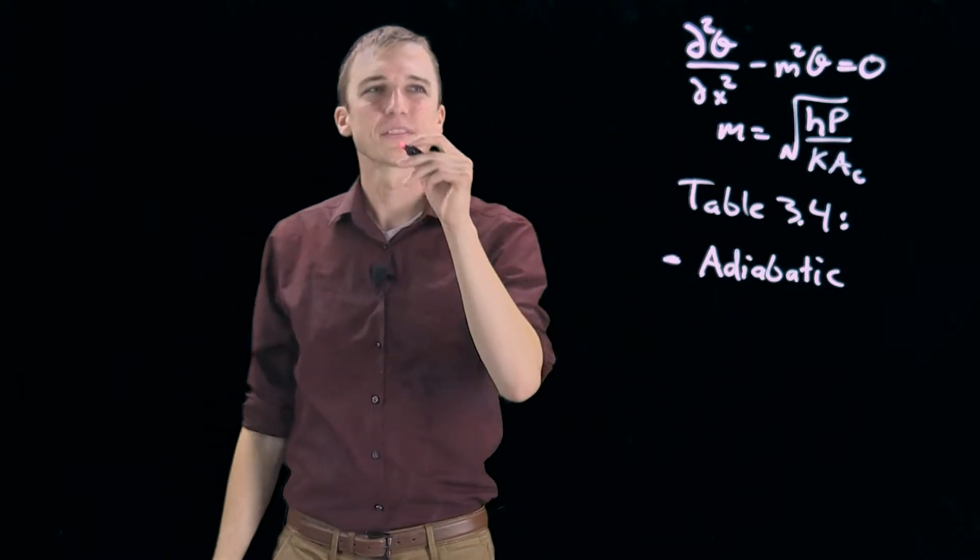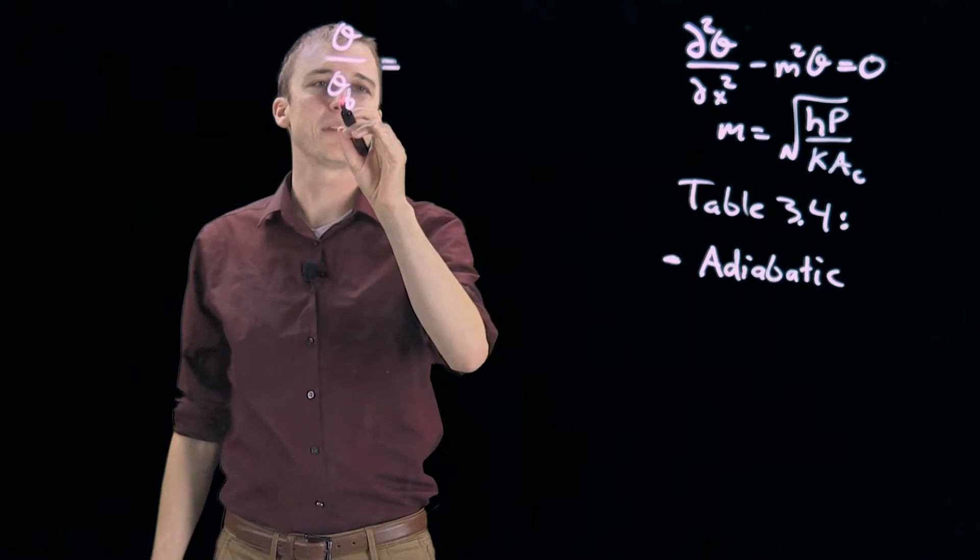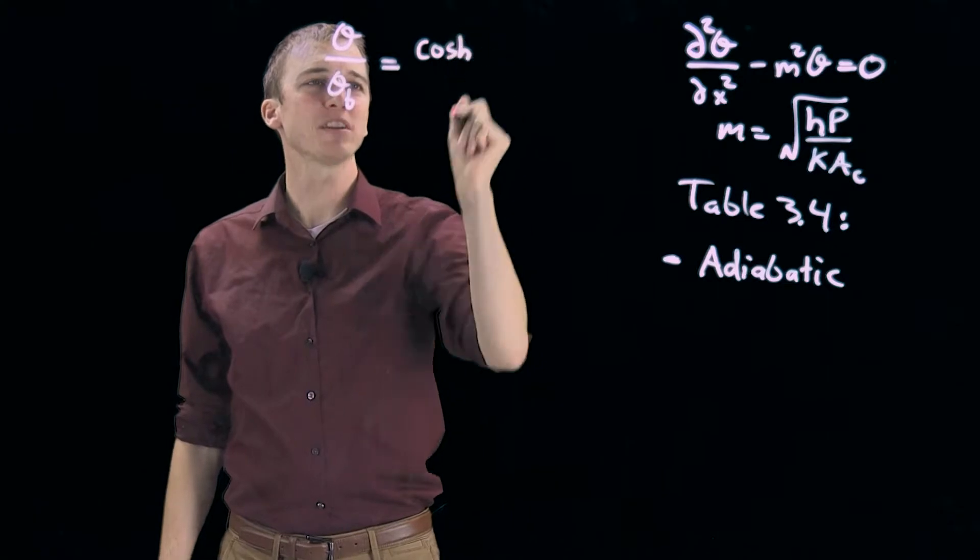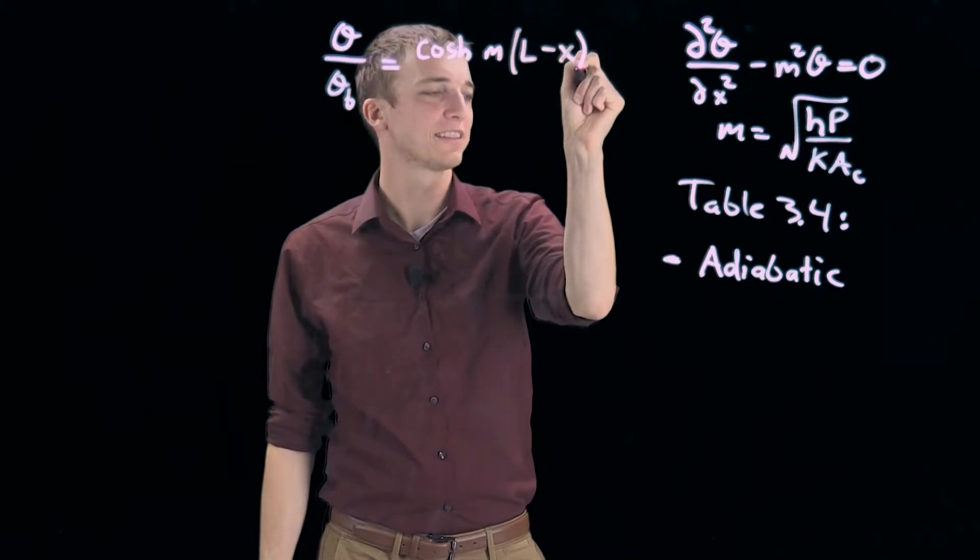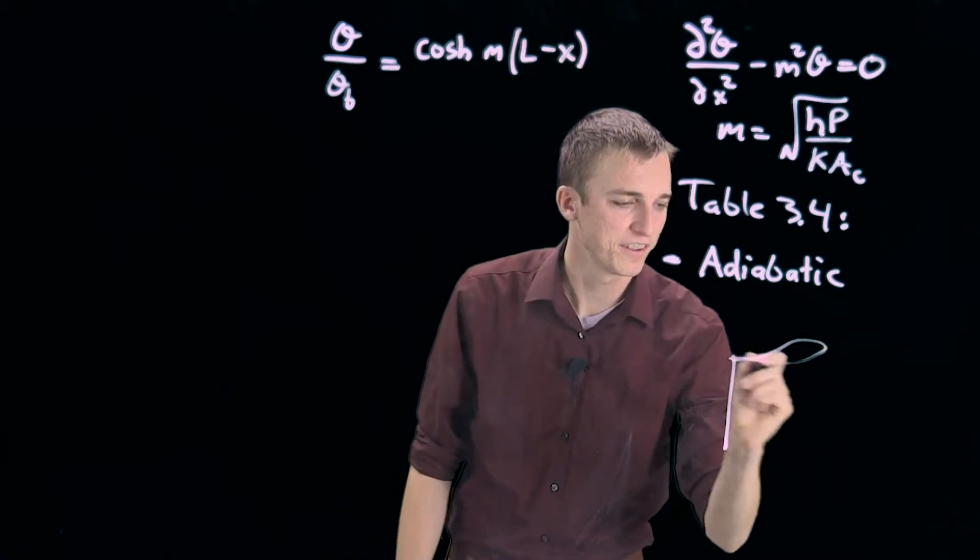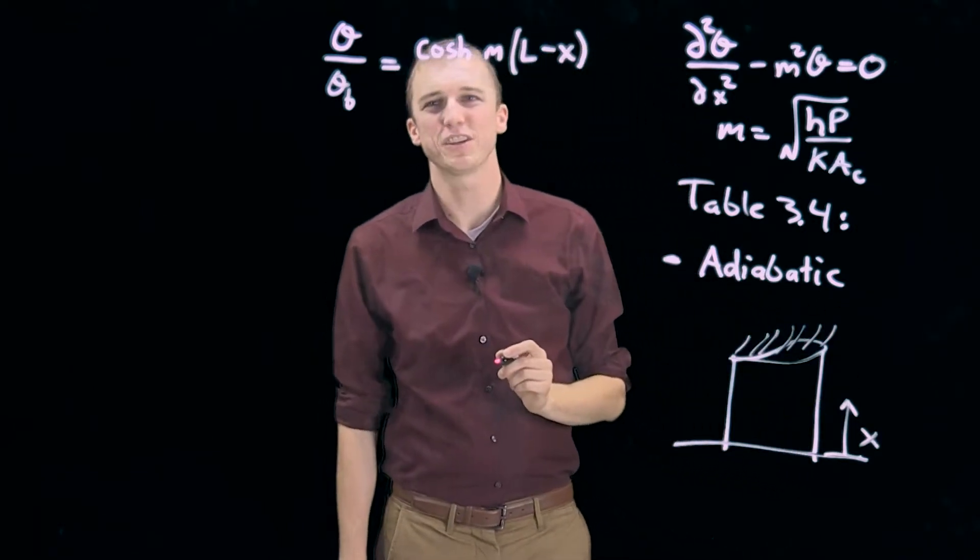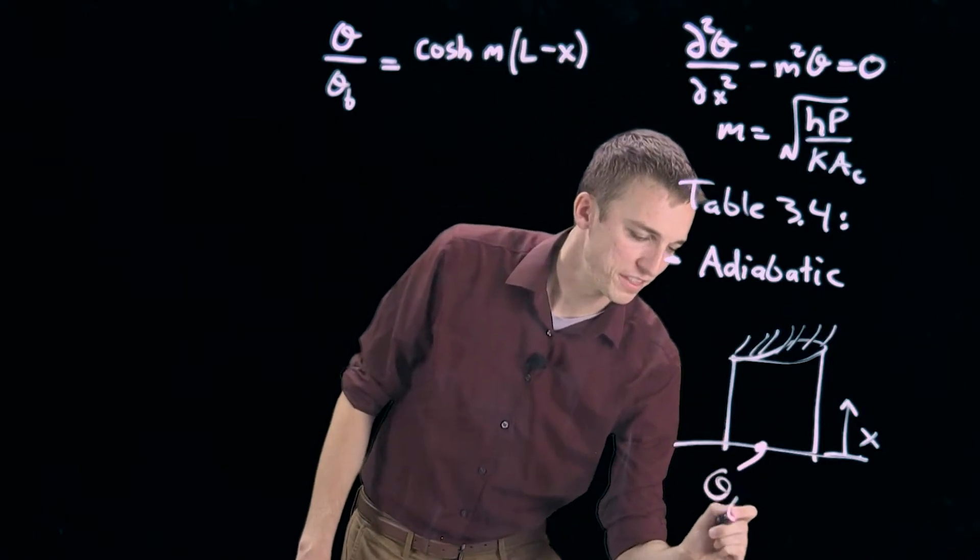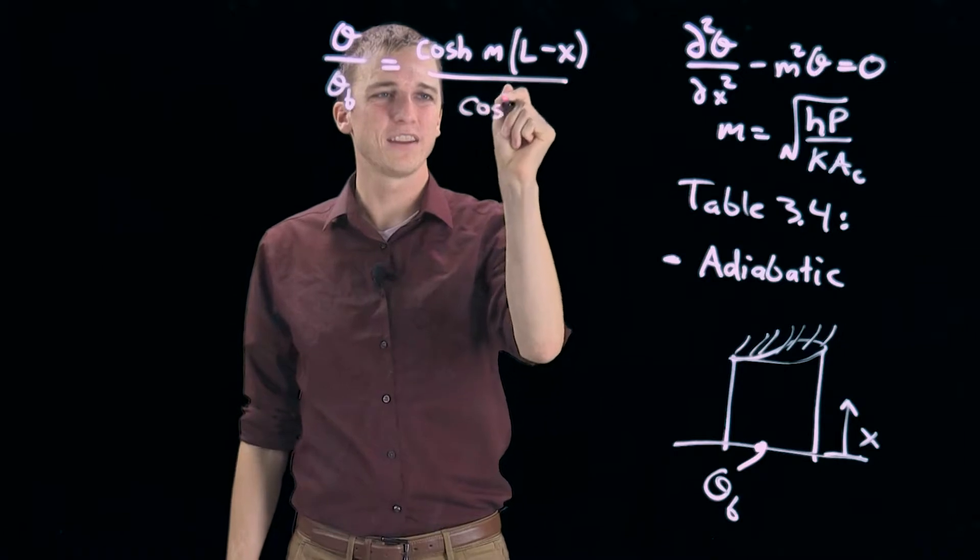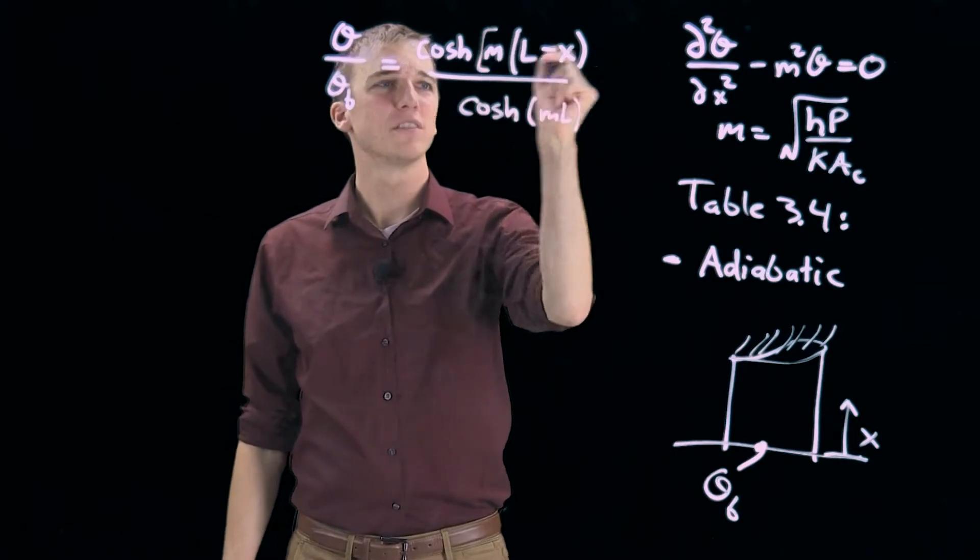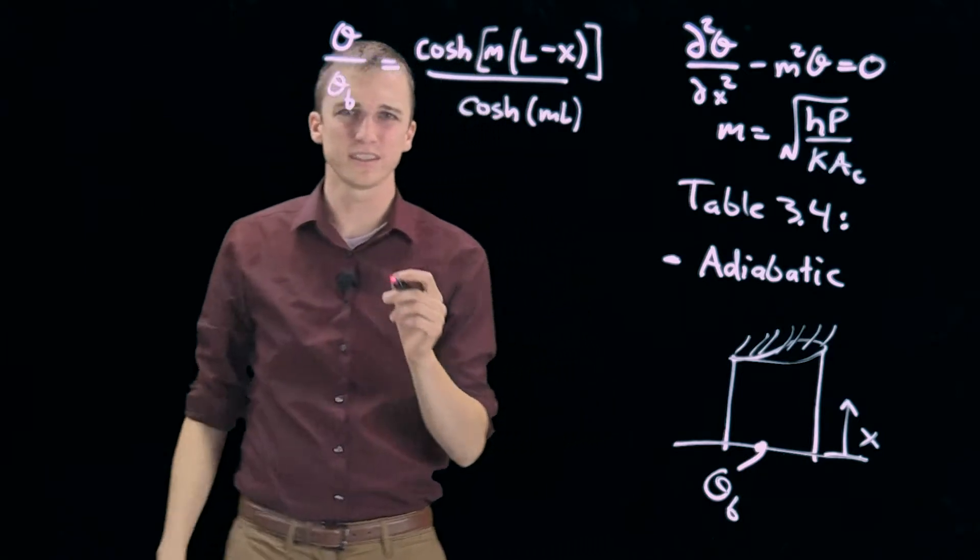I'm just going to give you those equations right now. The temperature profile looks like this: theta over theta b, or the theta applied to the base, is equal to the hyperbolic cosine, which I'll call cosh, times m multiplied by l minus x. Here's our fin, x is referenced from the bottom, and this is insulated at the top. And theta b would be theta evaluated at the base. In the denominator, we have cosh times ml. This is hyperbolic cosine of that whole term. This will tell us our temperature profile.